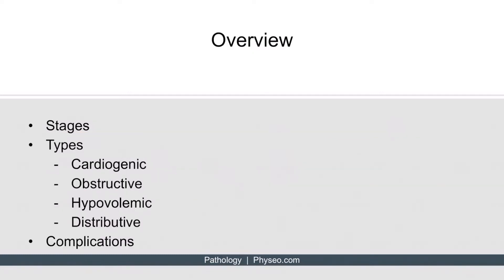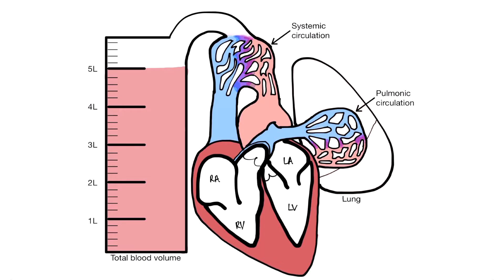Now let's discuss the four types of shock. Variations in this image will be used to illustrate and differentiate between the different types of shock. The average person's normal blood volume is approximately 5 liters. Also note that in the coming images, the pathology that we'll focus on will be shown in gray.